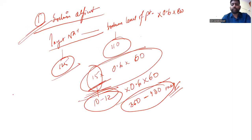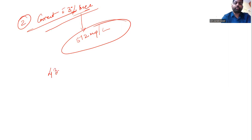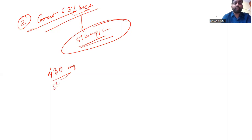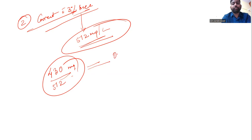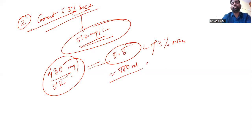Suppose we have to correct around 430 milliequivalents in the first 24 hours. Since 512 milliequivalents are present in one liter of 3% NaCl, 430 milliequivalents requires approximately 0.8 liters — which is roughly 800 mL of 3% normal saline. So in the first 24 hours you are supposed to infuse 800 mL of 3% NaCl. One bottle of 3% NaCl is about 100 mL, so you need 8 bottles.